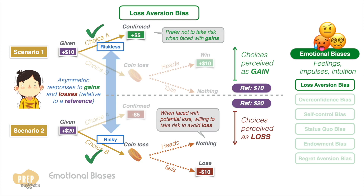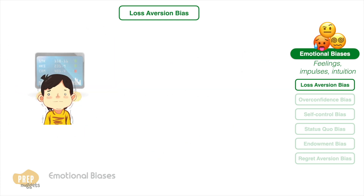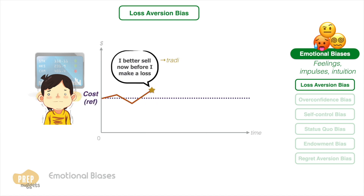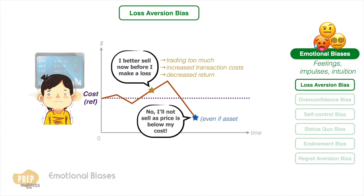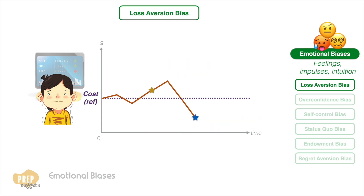In financial markets, consequences of loss aversion bias may include selling to avoid a loss, which may result in trading too much, increasing transaction costs and decreasing returns, or incurring too much risk by continuing to hold on to assets just because they are lower than cost, even if the asset has lost its fundamental value.